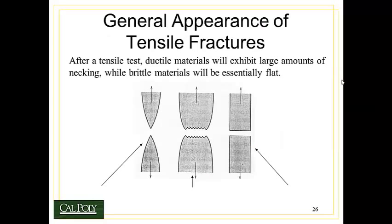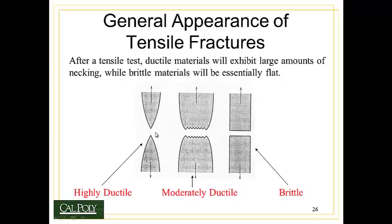Let's take a look at how we can visualize the difference between ductile and brittle fractures. Imagine that we pull on a tensile bar — something that looks like a cylinder in cross section. If we pull on it and it necks down to a point, we consider that to be highly ductile behavior.